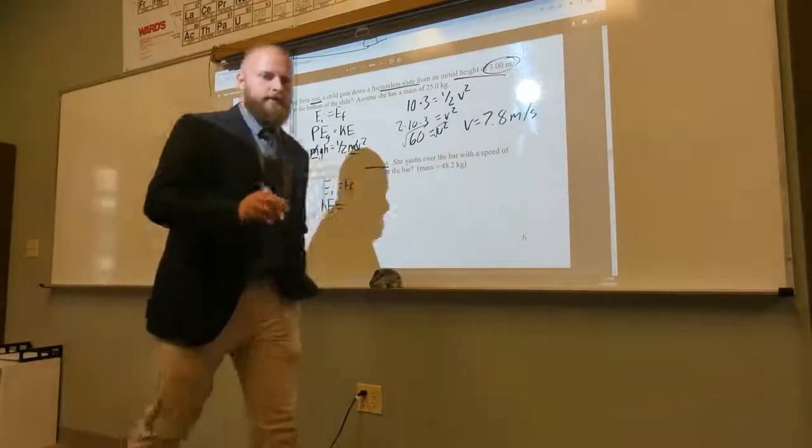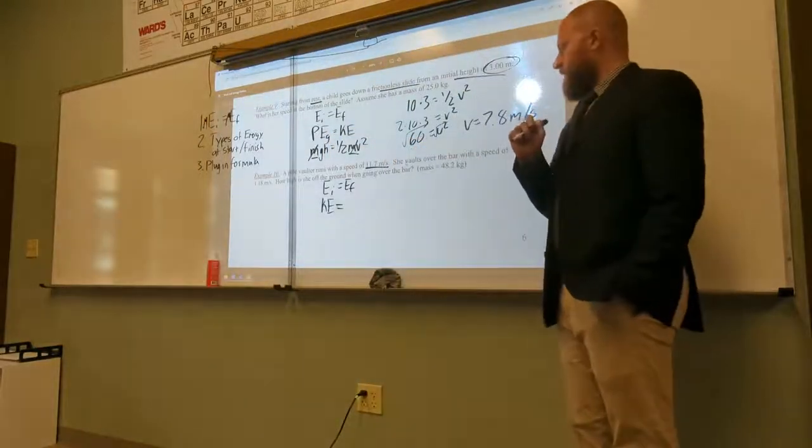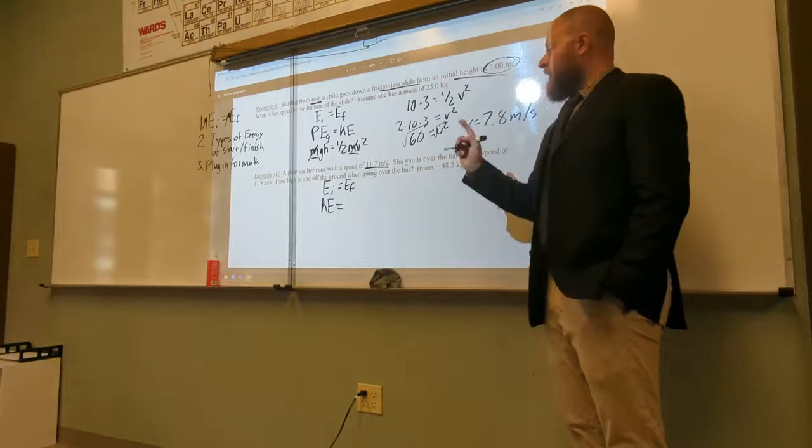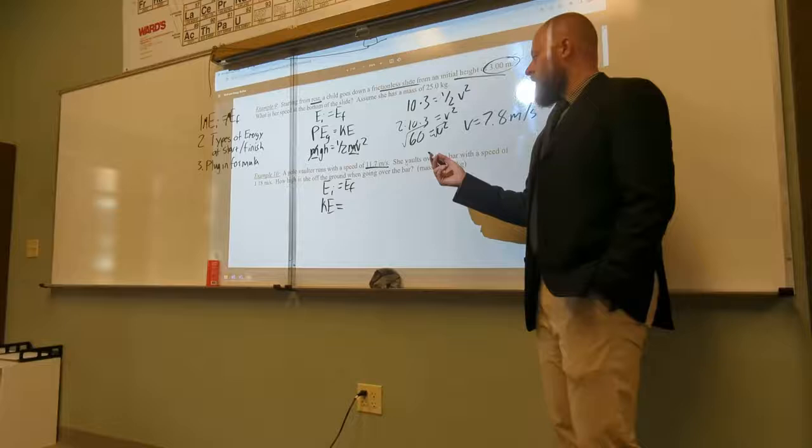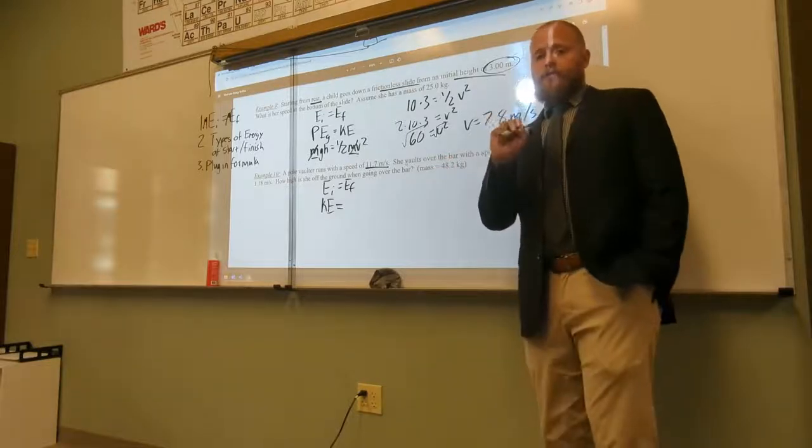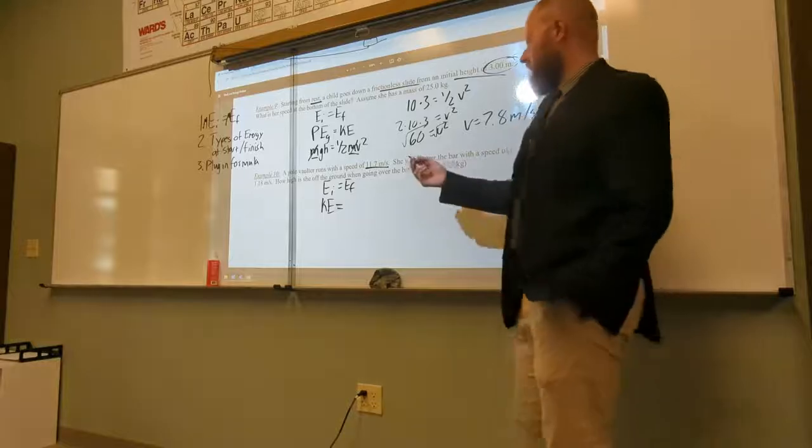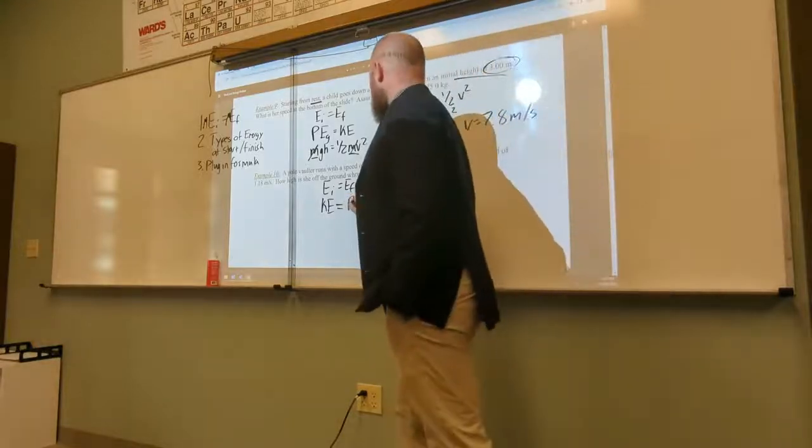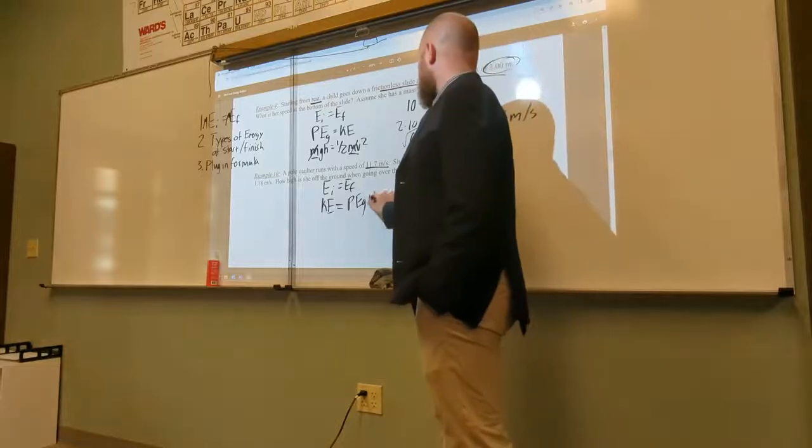So, when she's going over the bar, is she above the ground? Yes. She is above the ground. And, also, is she moving? Yes. So, that should give me two types of energies. What types of energies are those? Hopefully, you said PEG, or my gravitational potential energy, and KE.